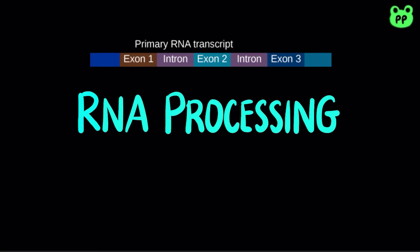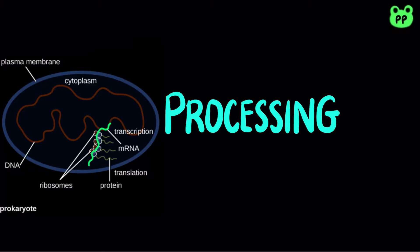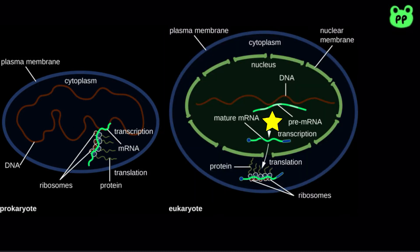A newly synthesized RNA molecule is called a primary transcript, which often undergoes further processing after transcription. In bacteria, transcription of mRNA is coupled to translation. However, in eukaryotes, the primary transcript of mRNA must first be processed.